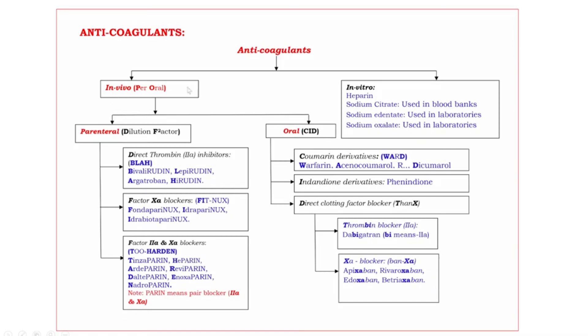In vivo anticoagulants are grouped into two types. The mnemonic is 'per-oral', but the bold letters are P and O. P means parenteral, O means oral.